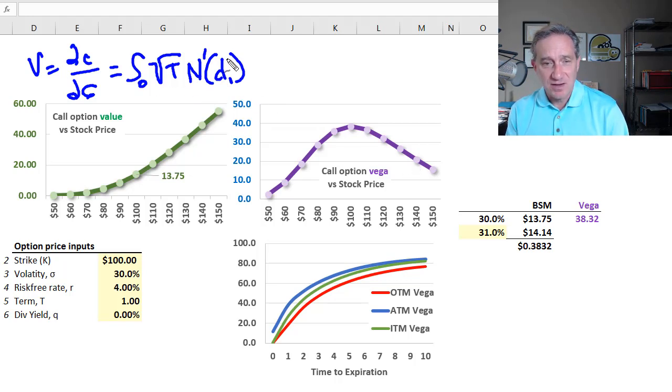It's not exactly a bell curve because it's distorted a bit by this multiplier, but that's handy to remember because then we don't have any problem remembering that Vega tends to peak for an at-the-money option. At the money or near at the money, Vega is highest, and then deeply out of the money or deeply in the money, it's going to tend toward zero.